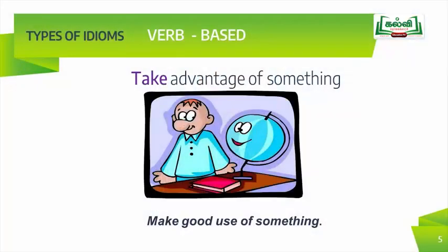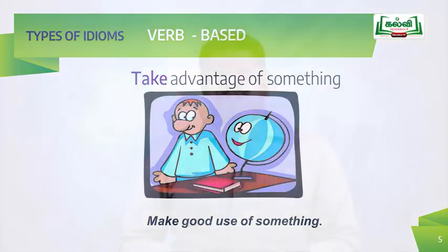Let us start with the type of idioms based on verbs. Look at the example here: 'take advantage of something.' The meaning is to make good use of something. Here we can see the verb used in this idiom.